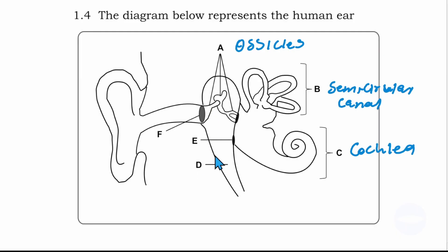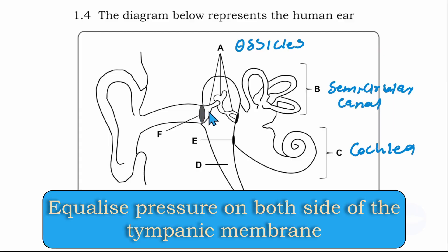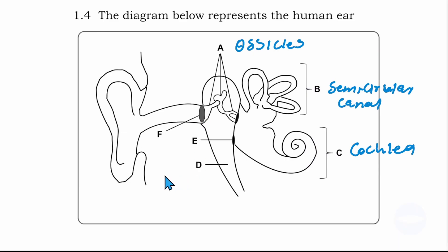Number D is the eustachian tube. This tube is connected to the throat at the back of our neck so that the tympanic membrane is able to vibrate. It equalizes the pressure on both sides of the tympanic membrane.